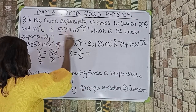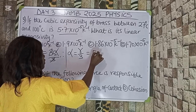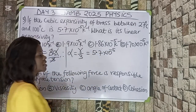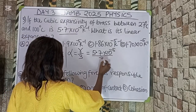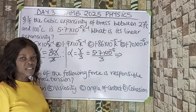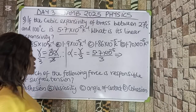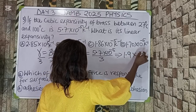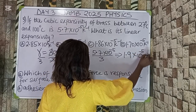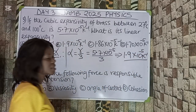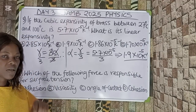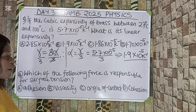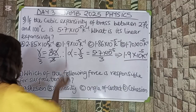Substituting, α = 5.7×10⁻⁵ divided by 3. Dividing gives us 1.9×10⁻⁵ per Kelvin. In this particular question, we are not using the temperature to do anything. The correct option is option B.